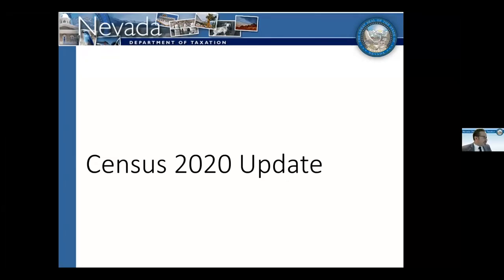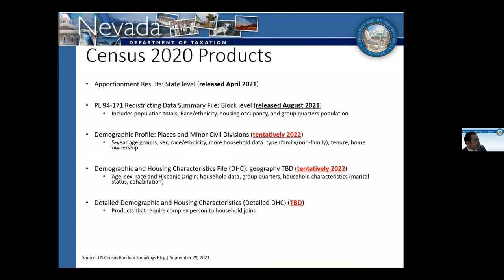We've heard a lot of talk about the 2020 census in several regards. We did finally get data over the last few months. I'm going to review what has been released to date, pull out some of the trends we've seen, and then go into a more specific Nevada update. It's really important to understand that we're midway through the products being rolled out from the 2020 census. There have been a lot of delays due to the pandemic, so we really only have two of the primary products released to date.